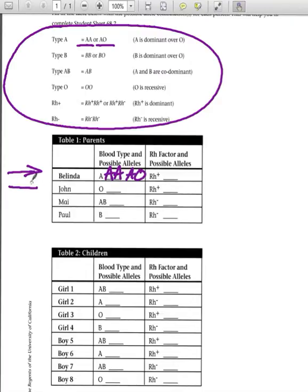If you take a look at John, John is Type O blood, so there's only one possible combination that could result in Type O blood, and that is O, O.